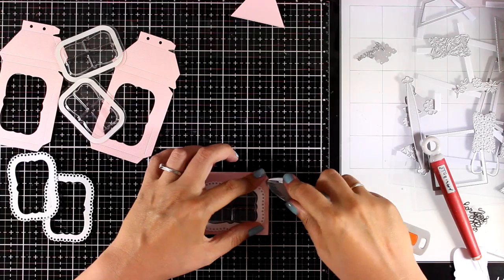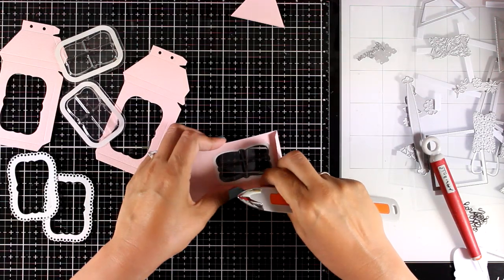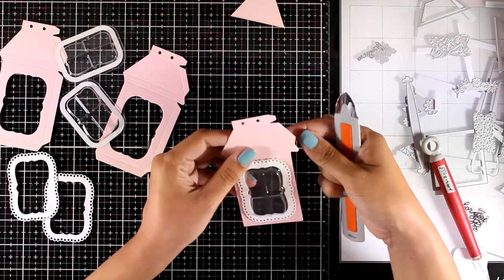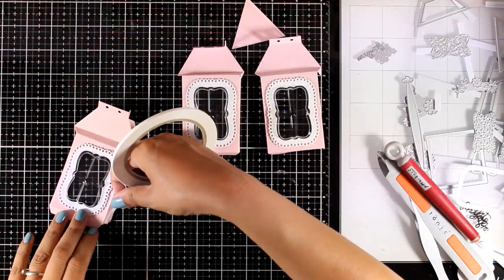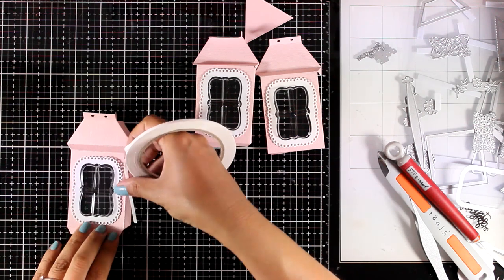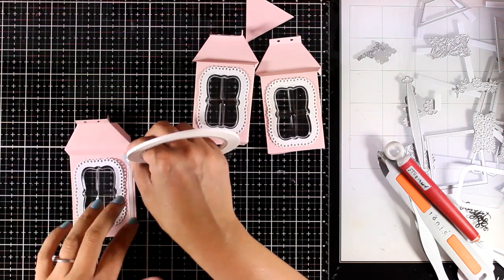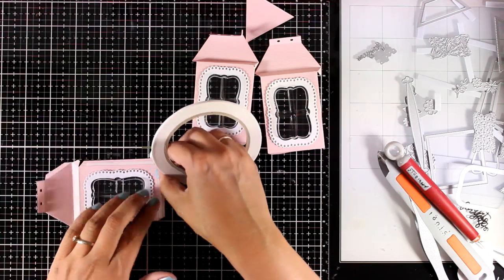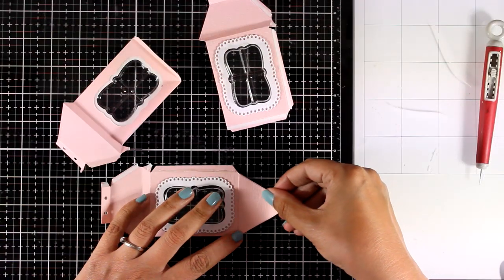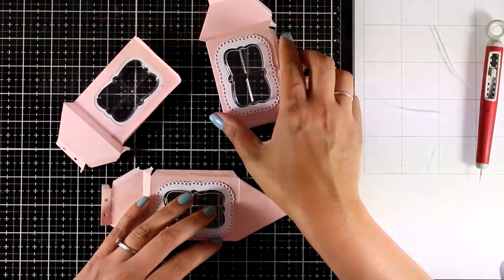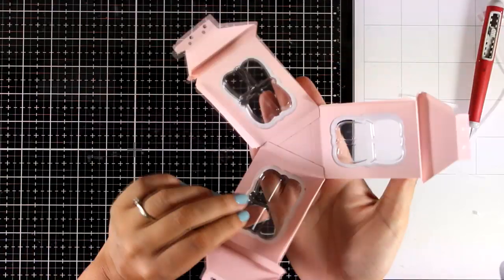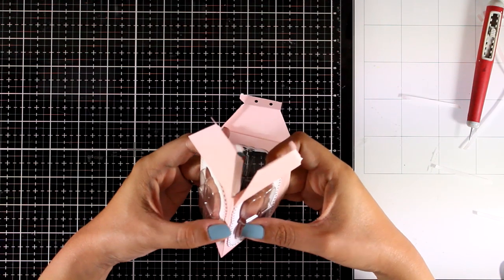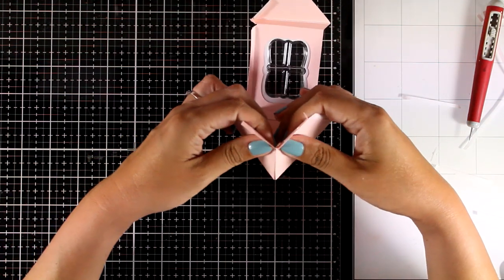When you do the die cutting, you will also get some scoring lines which I'm going to reinforce with my bone folder here. So I have everything ready to go. I'm also going to use very thin double-sided tape all around those flaps. It's really easy to put together. Just remove the backing from all those double-sided tapes and I'm going to stick the triangle at the base. Go all around with those panels like so, and then all I have to do is to lift them up and the box is going to come together like magic.